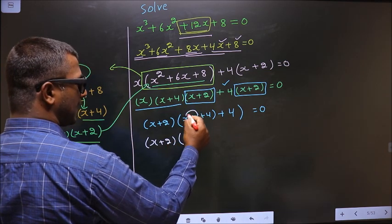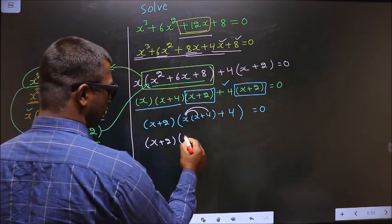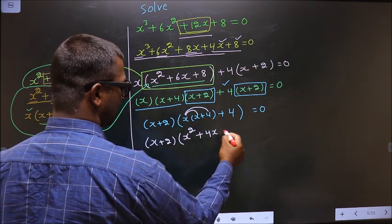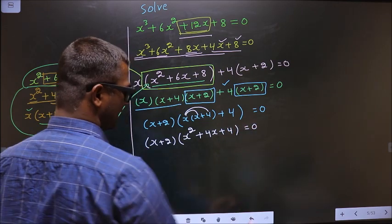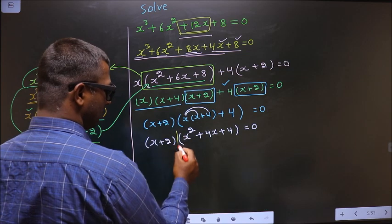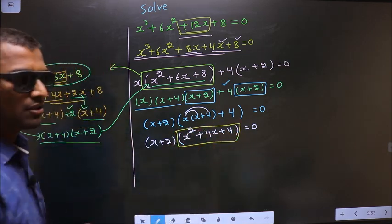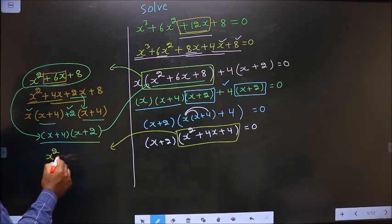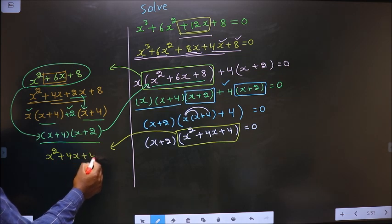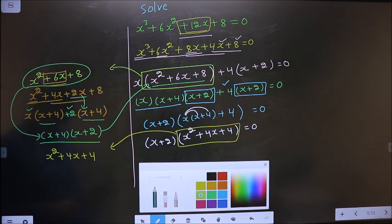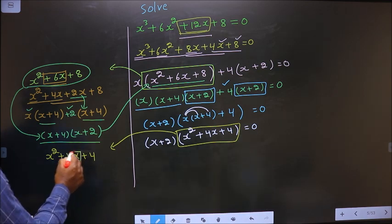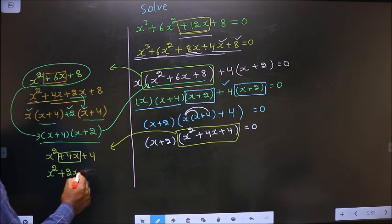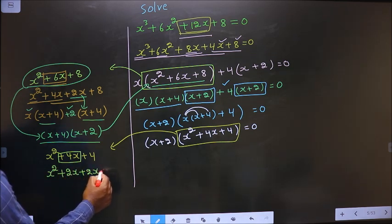Now you open up the bracket in this way. So here you get x square plus 4x plus 4, equal to 0. This is quadratic, so I will factorize this quadratic equation here — that is x square plus 4x plus 4. To factorize this, I should change the middle term, that is plus 4x. So in place of 4x, I write 2x plus 2x, plus 4.